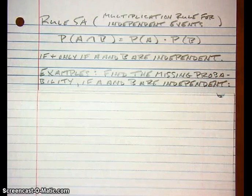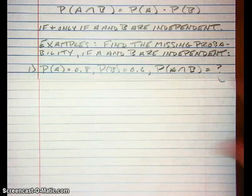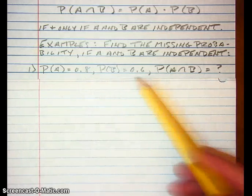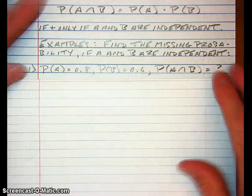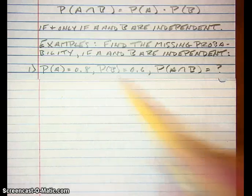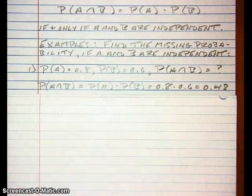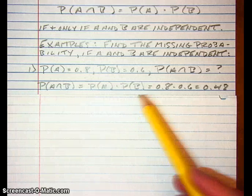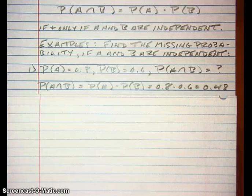Here are some examples. We're going to find the missing probability assuming that A and B are independent. We've got the probability of A as 0.8, probability of B as 0.6, and probability of A and B is unknown. To find that, we just multiply the two probabilities together. So probability of A and B equals 0.8 times 0.6, which is 0.48.